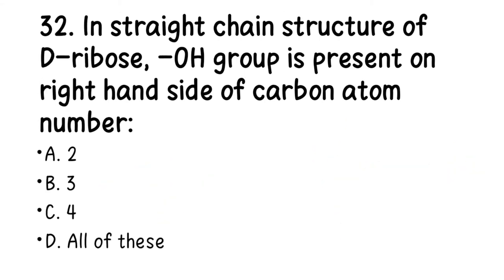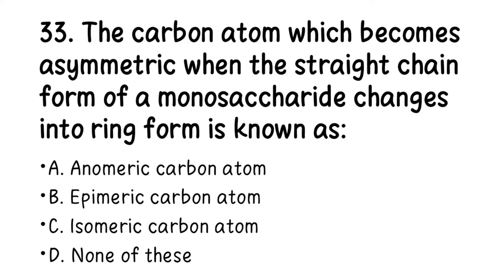Number 32. In the straight-chain structure of D-glucose, the OH group is present on the right-hand side of carbon atom number: A. 2, B. 3, C. 4, D. All of these. Just draw out a D-glucose structure and you'll easily get your answer. The right answer is D — all of these positions have OH on the right-hand side.